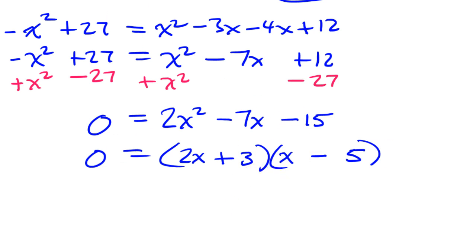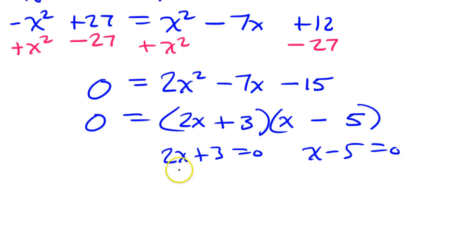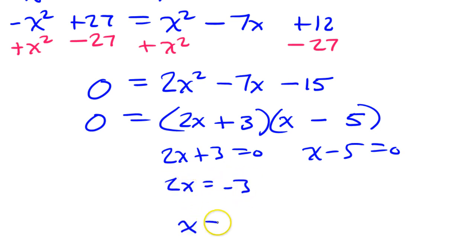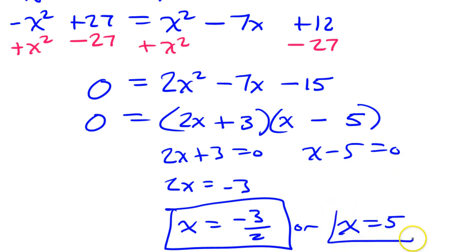To finish solving the equation, I'm going to set these two factors equal to zero. So, 2x plus 3 will equal zero, and x minus 5 will equal zero. Subtracting 3, I've got 2x is equal to negative 3. Dividing by 2, I get x is equal to negative 3 over 2. Adding 5 to both sides, I get x equals 5. So those are my two solutions.